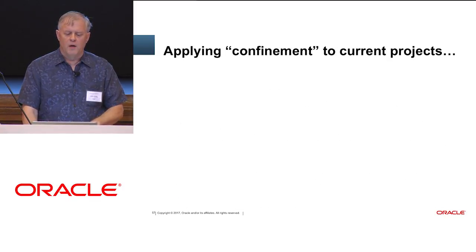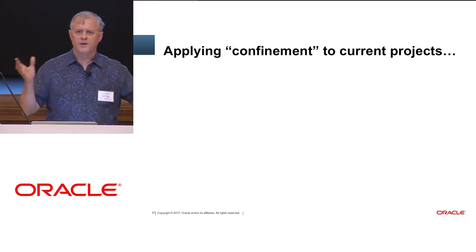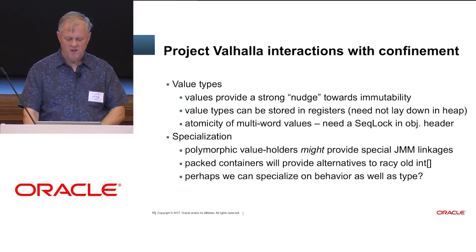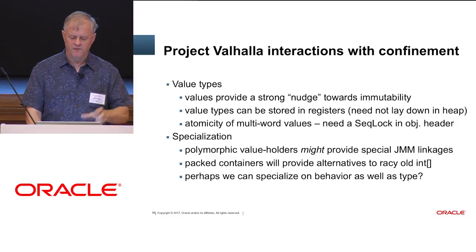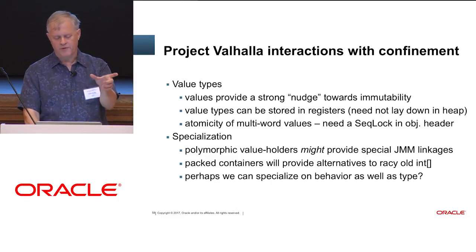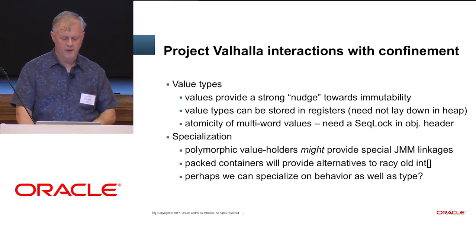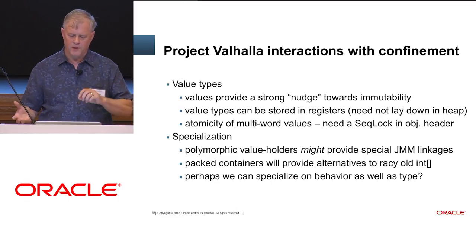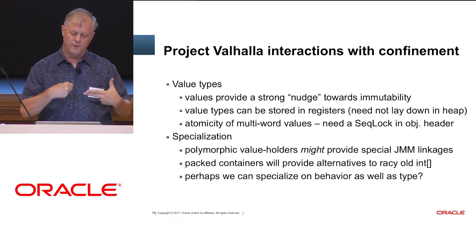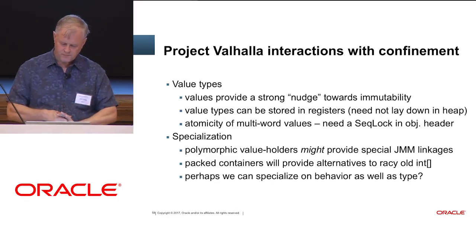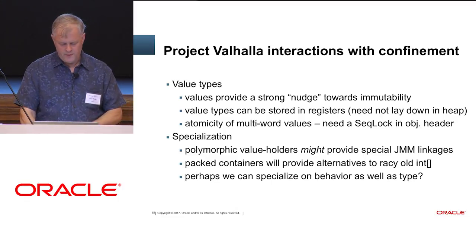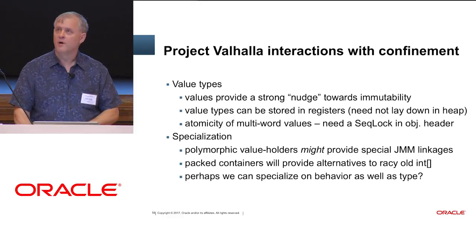Just to give you an idea of how some of these ideas could apply to current projects you'll hear about the rest of the week: Valhalla value types — because the value types are confinable, they can be stored in registers. We can confine their reads and writes under atomicity. Valhalla also includes specialization — we might be able to tie special JMM behaviors to certain polymorphic value holders. Packed lists will provide alternatives to racy arrays, and maybe we can specialize on behavior of locking as well as type.